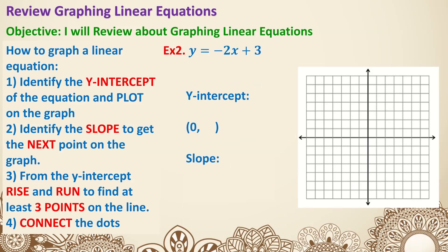Let's go over another one — Example 2. This time we have y equals negative two x plus three. In slope-intercept form y equals mx plus b, we identify b first, which is three. So the y-intercept is at (0, 3). Now we find the slope, which is negative two — the number in front of x. Negative two is a fraction: you just put it over one, so it's negative two over one.